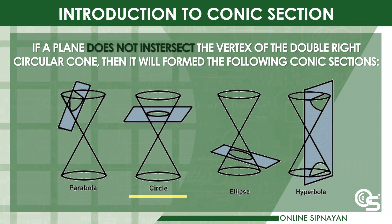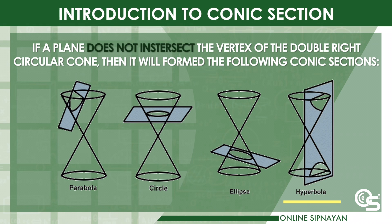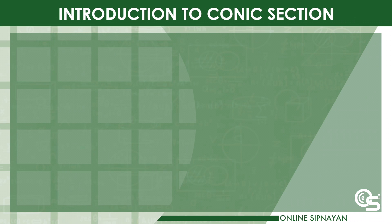Next is the circle — as you observe, the plane is perpendicular to the axis. Third, the ellipse, where the plane is not perpendicular to the axis and is not parallel to any of the generators. Last, the hyperbola — if you observe, the plane cuts both the upper and lower nap.